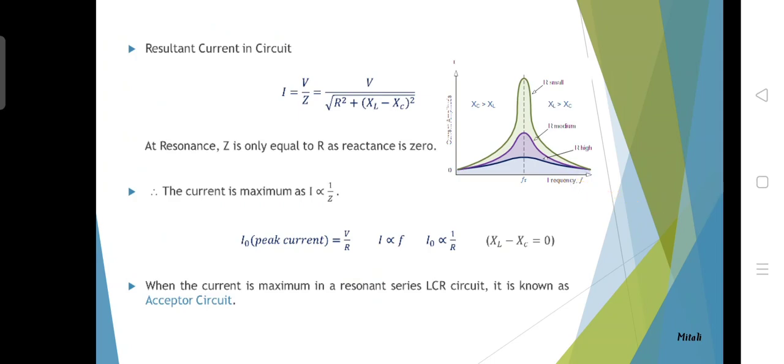The resultant current in the circuit would be V divided by Z, where Z is the impedance of the circuit and V is the supplied voltage. V divided by Z equals V divided by under root R square plus XL minus Xc whole square. Since inductive reactance is equal to the capacitive reactance, the circuit has minimum resistance. XL minus Xc whole square becomes 0, so I becomes V by R.